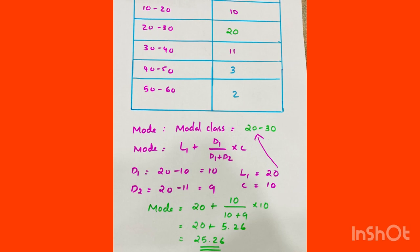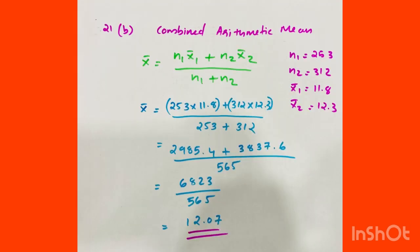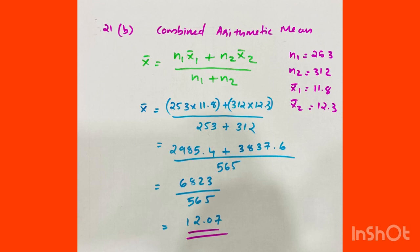Now one more question. What is the difference between the means? Girls: 253, mean 11.8. Boys: 312, arithmetic mean 12.3. The combined arithmetic mean formula is x̄ = (n1·x̄1 + n2·x̄2) / (n1 + n2) = (253 × 11.8 + 312 × 12.3) / (253 + 312) = 6823 / 565 = 12.0.